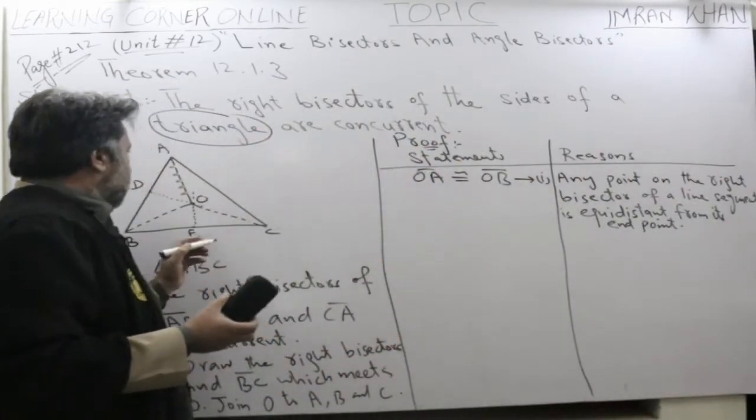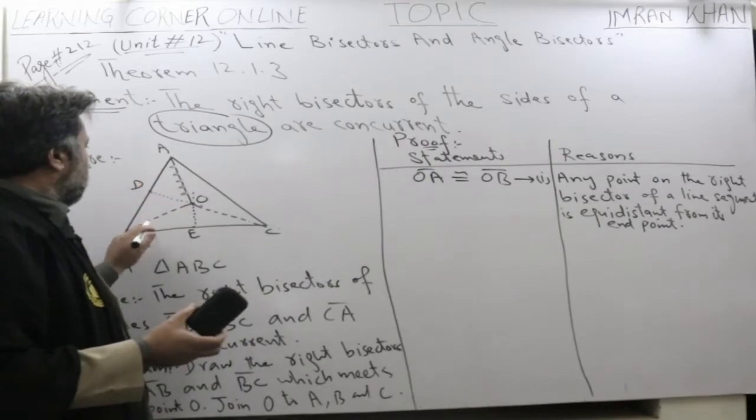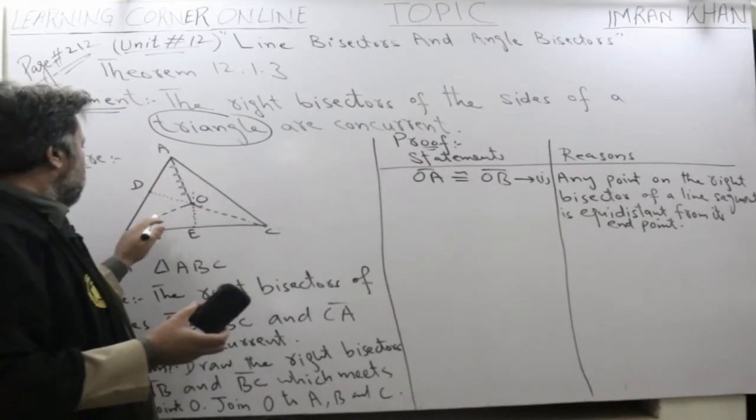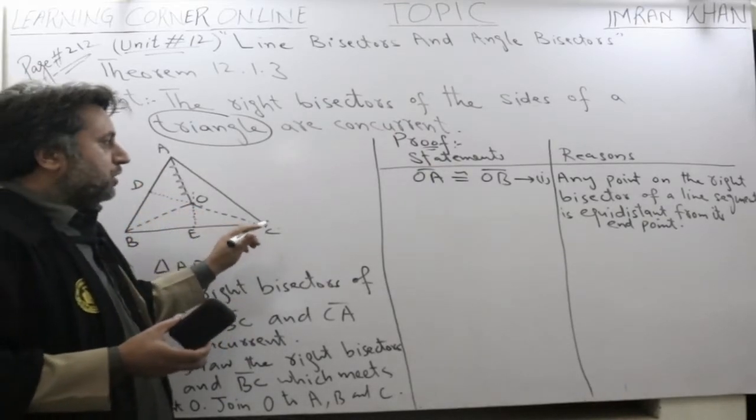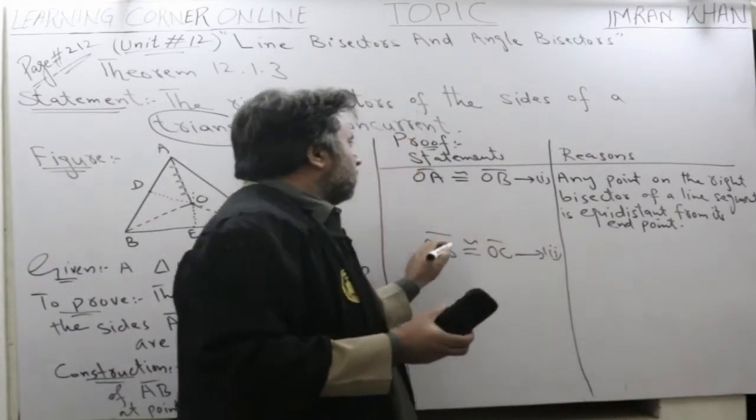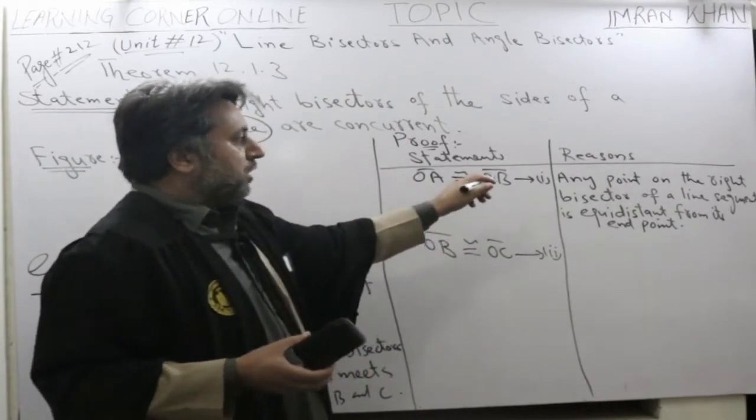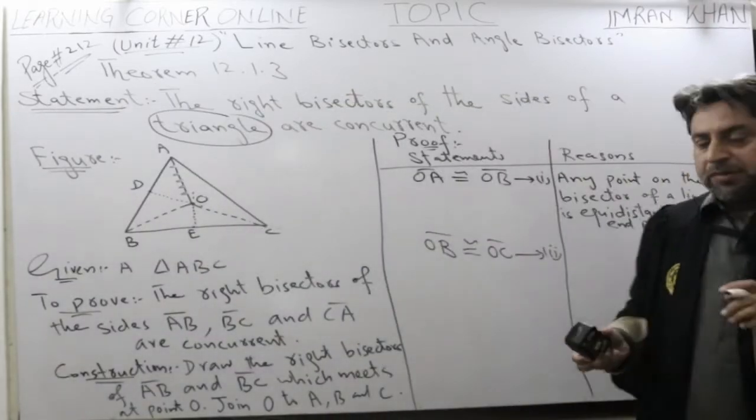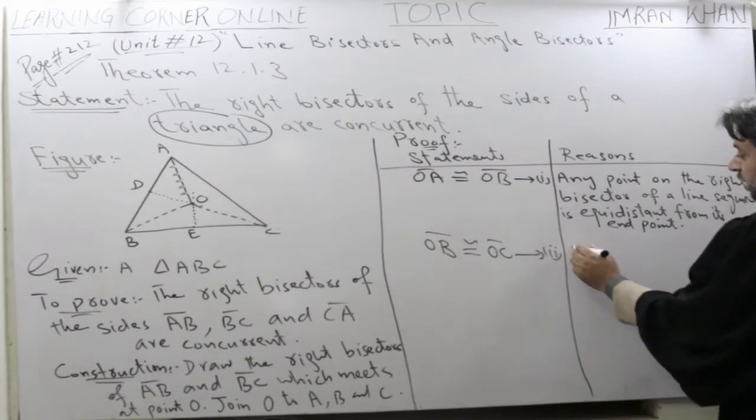Now, similarly, when OA is congruent to OB, it means that OB is congruent to what? OC. The reason of this statement is what? As in one. No need to write the full statement. We will write just as in one.